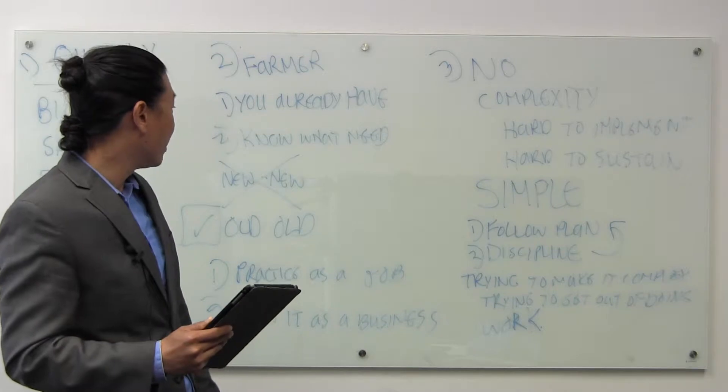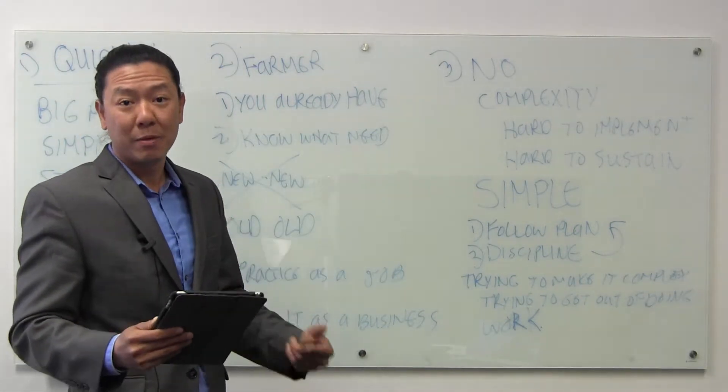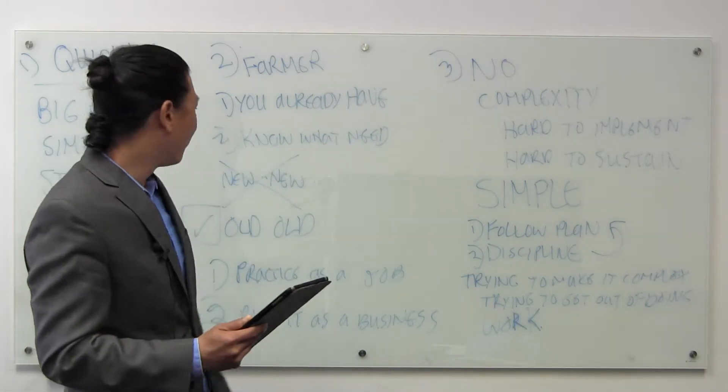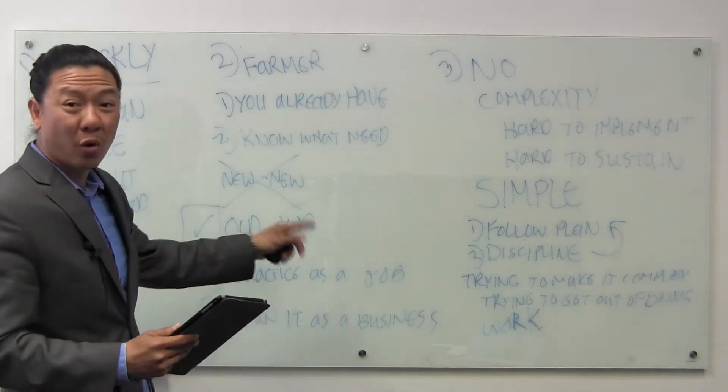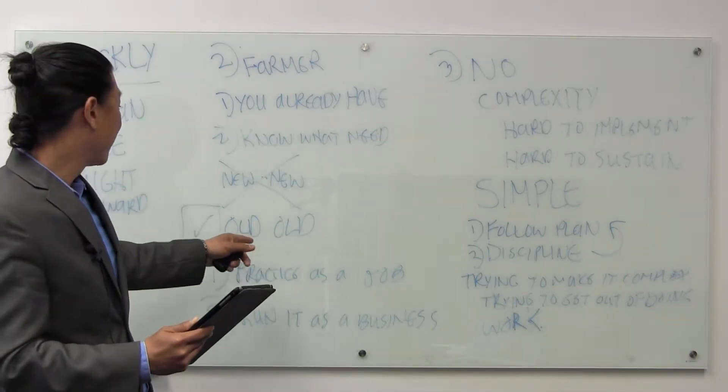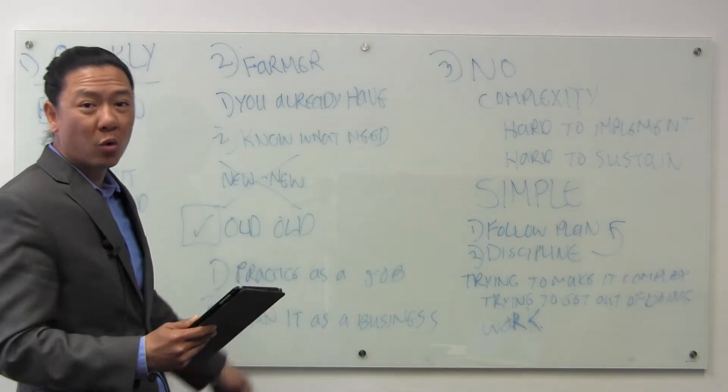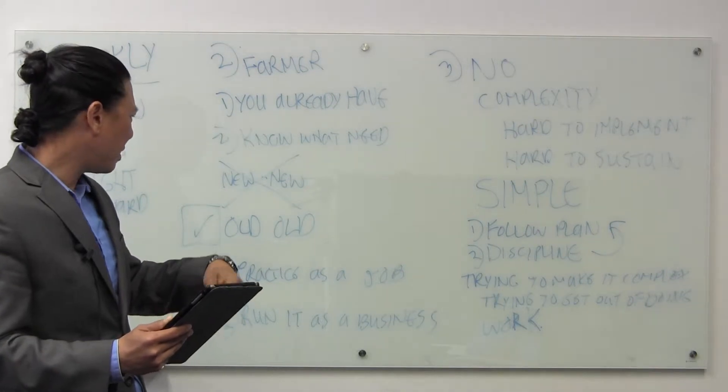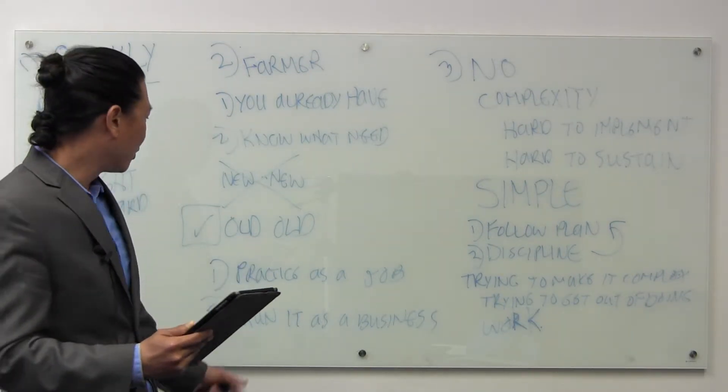So the moral of the story is that you probably already have what you need to become a millionaire real estate agent and you probably know what you need to do. So instead of chasing the new new, you should work the old old. Instead of chasing that new shiny object, work the old one like prospecting, prospecting consistently, following up on leads. The simple stuff.